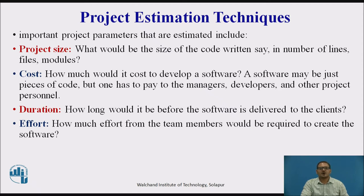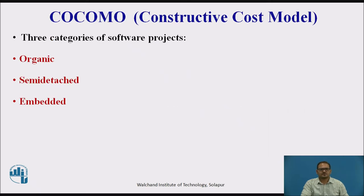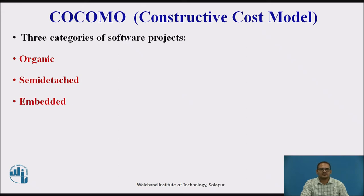Duration refers to how long it will be before the software is developed and delivered to the client. Effort refers to how much effort from the team members is required to create the software. The COCOMO model — Constructive Cost Model — was proposed by Boehm. According to him, there are three categories of software projects: organic, semi-detached, and embedded. This classification is done by considering the characteristics of the software, the development team, and the environment.